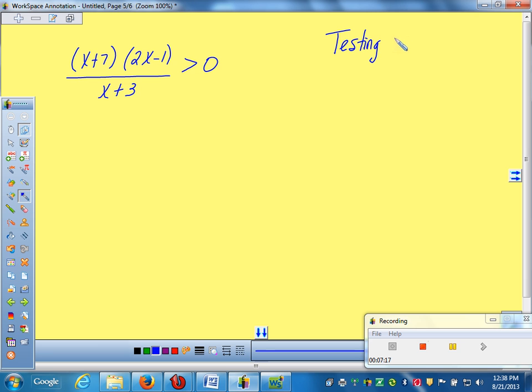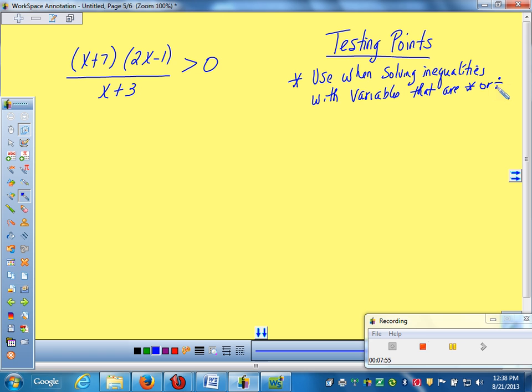But it also works if this one's positive and those two are negative. Two negatives make it positive again. So there's multiple places where this answer will fall. What we have to do, you cannot solve this with algebra. You can't go multiplying and moving terms. You have to do a new method you've never seen before. It's called testing points.